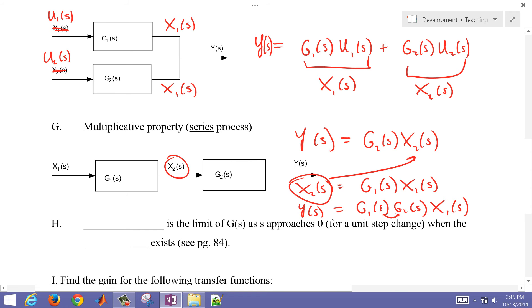So if I plug that back in here, I can get rid of x2, my intermediate value, and I can have g1 of s times g2 of s times x1 of s. And these can also be switched, g2 can be listed before g1. So this is the multiplicative property, and that's for these transfer functions in series.